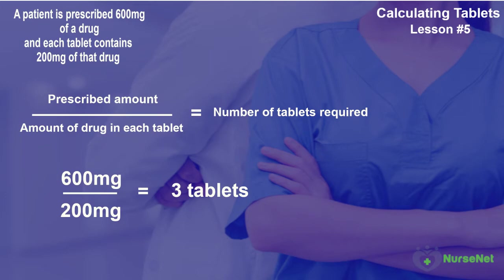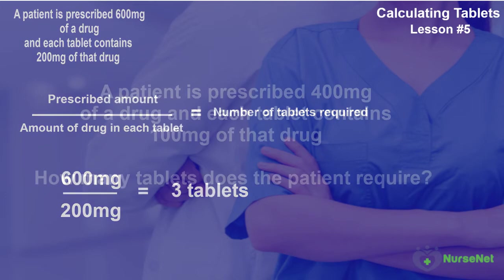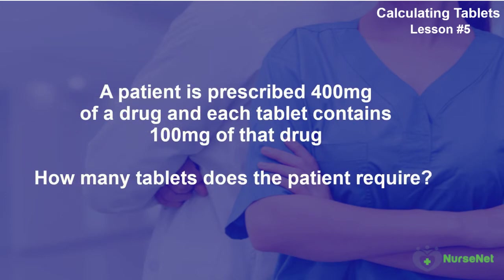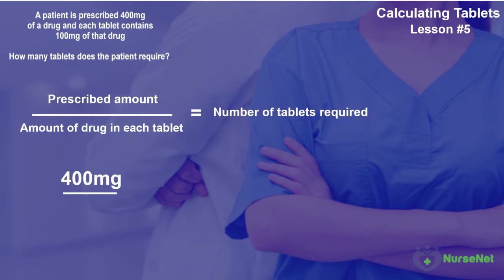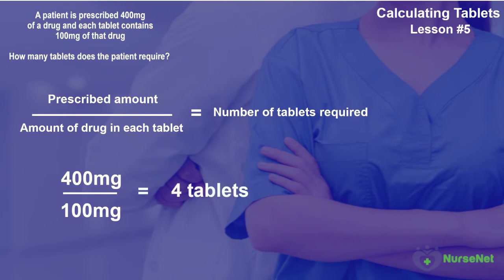Let's do another together. A patient is prescribed 400mg of a drug, and each tablet contains 100mg of the drug. How many tablets does the patient require? Divide the prescribed amount by the amount that each tablet gives, which is 400mg divided by 100mg, which is four tablets.